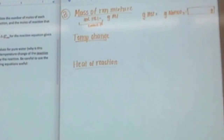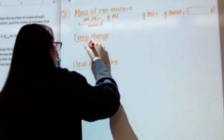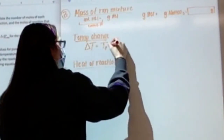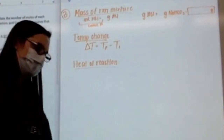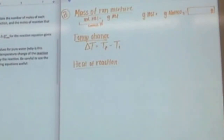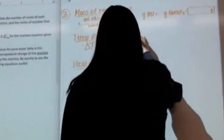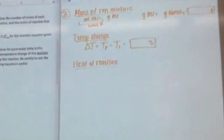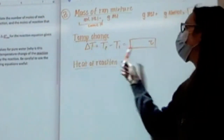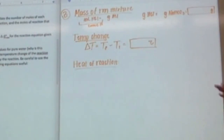For temperature change, we calculate delta T as final minus initial. It can be negative. A negative delta T will indicate an endothermic reaction for solutions. So you're going to do final minus initial and plug your numbers in.